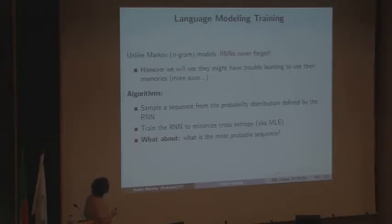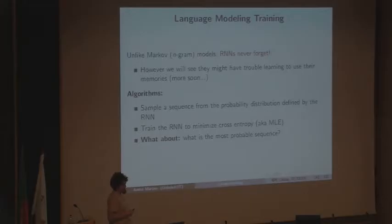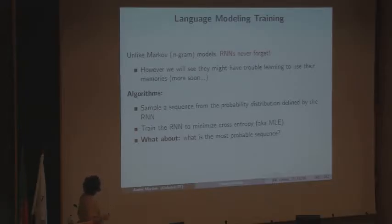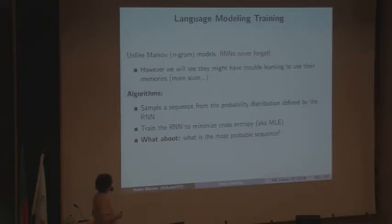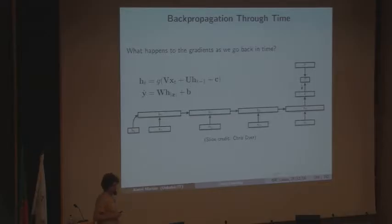However, the fact that RNNs never forget doesn't mean they can easily exploit those memories. Sometimes they have trouble using their memories. There are several algorithms we can devise using RNNs: sampling sequences, training to minimize cross-entropy to generate language, and finding the most probable sequence.